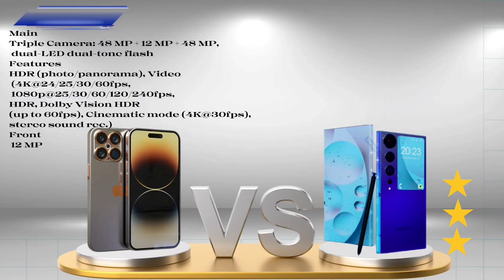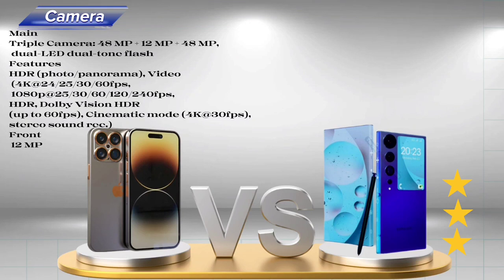iPhone 15 Ultra camera — Main: Triple camera, 48 MP + 12 MP + 48 MP. Dual LED dual-tone flash. Features: HDR, Photo, Panorama. Video: 4K at 24/25/30/60 FPS; 1080p at 25/30/60/120/240 FPS; Dolby Vision HDR up to 60 FPS; Cinematic Mode 4K at 30 FPS; Stereo sound recording. Front: 12 MP.